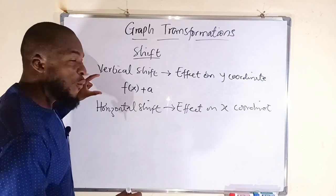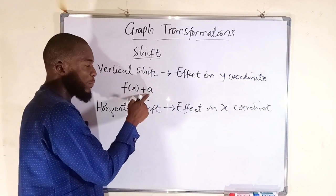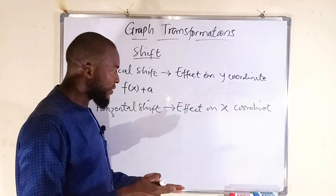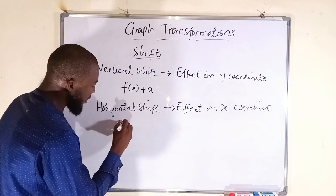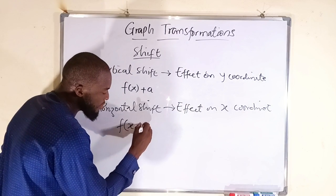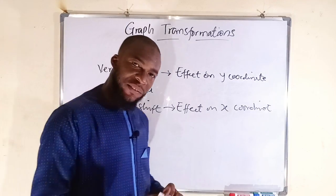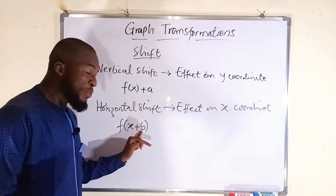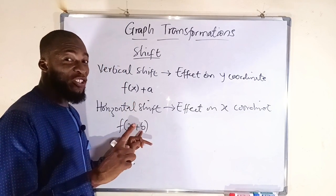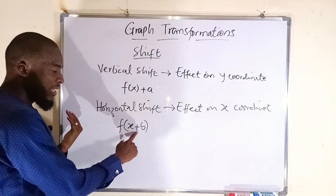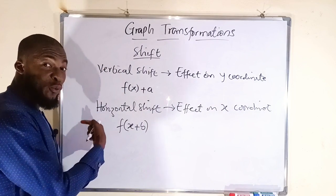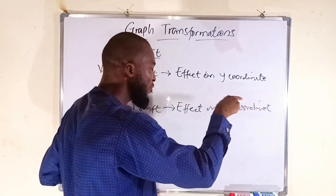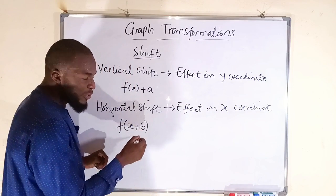So far we have four shifts, since each direction has two possibilities depending on the sign. For a vertical shift, if a is negative the graph goes down, if positive it goes up. For a horizontal shift, consider f(x + b): if b is positive, the shift will be toward the left-hand side; if b is negative, the graph moves to the right-hand side — you do the opposite of the sign.